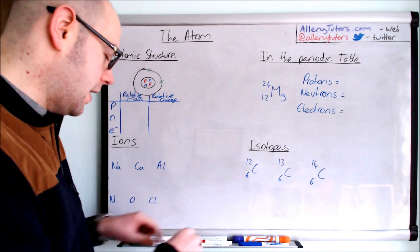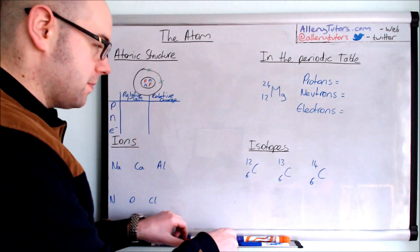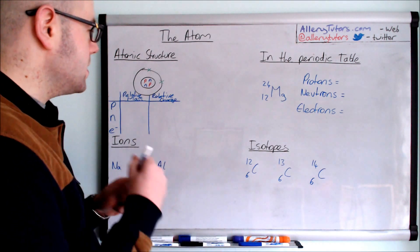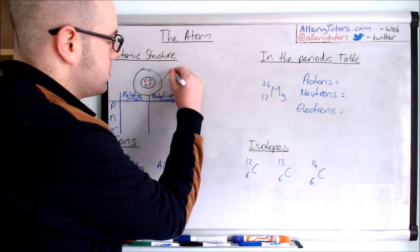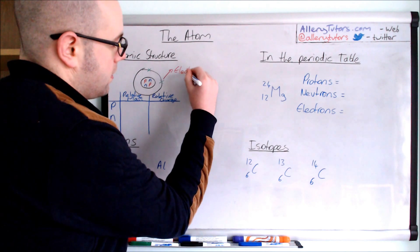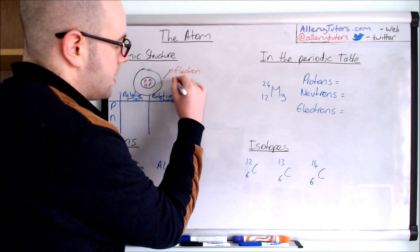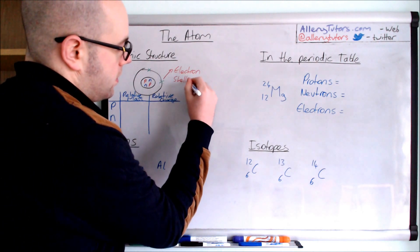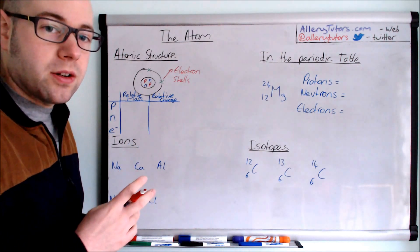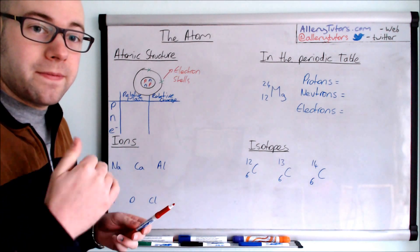We'll start with just quickly labeling our atom. So we have these which are electrons and these move around in shells. Normally we call these quantum, we call it quanta, so they have a fixed energy level. So we call them energy shells.